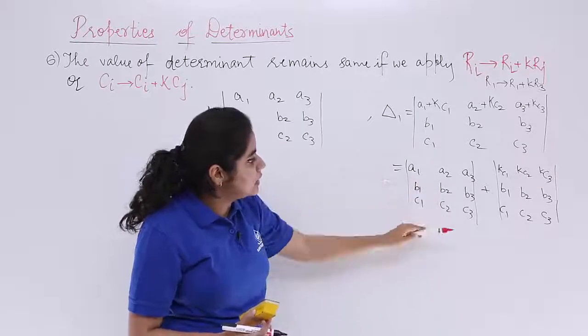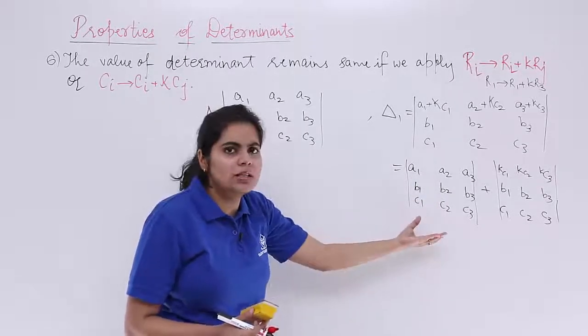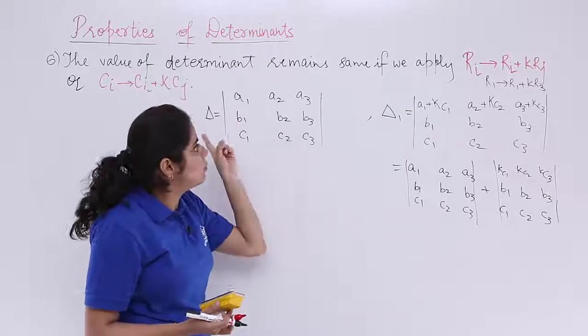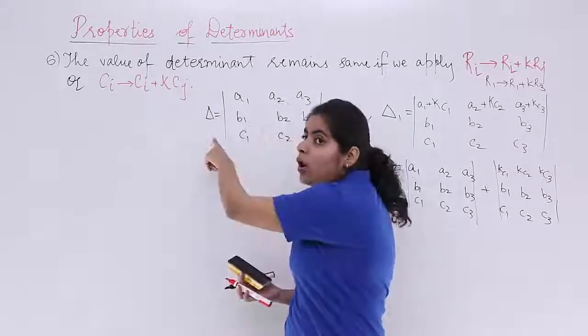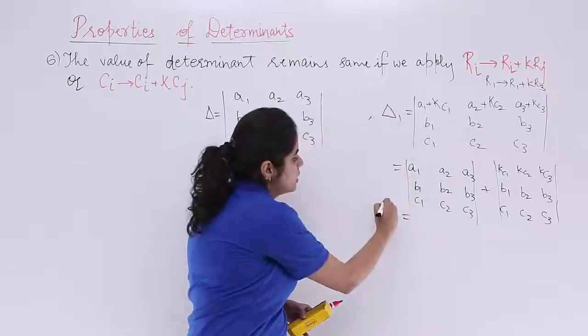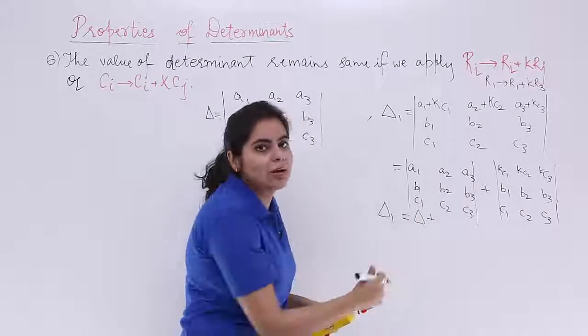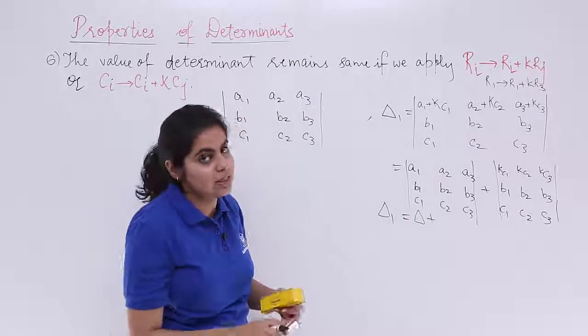Now, you see this determinant is what? a1, a2, a3, b1, b2, b3, c1, c2, c3. Something familiar to what? To del. So this is del. Del 1 is what we are evaluating. This has come out to be equal to del plus something. What is that plus something? Let's see.